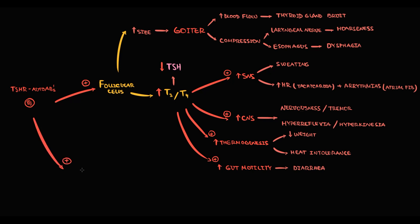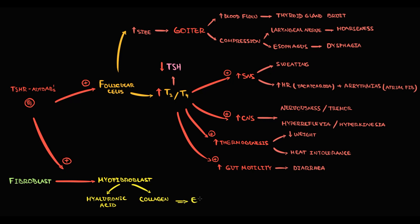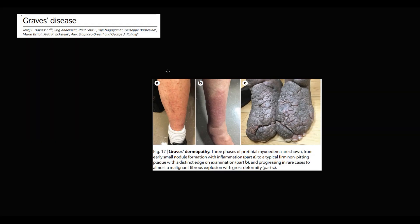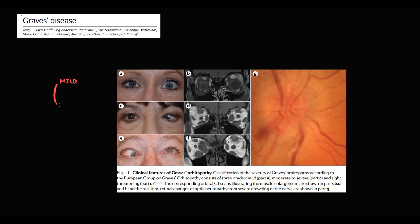The second site of action of TSH receptor autoantibodies are fibroblasts. Autoantibodies convert fibroblasts into myofibroblasts, which produce massive amounts of hyaluronic acid and collagen, forming a huge amount of extracellular matrix and causing edema. Most commonly this presents as pretibial myxedema and proptosis, which is a form of ophthalmopathy. Here we can see examples of three stages of myxedema — long-term Graves' disease can end up in gross deformity of the lower limb — and three stages of Graves' ophthalmopathy: mild, moderate, and severe, caused by severe edema of the muscle tissue.